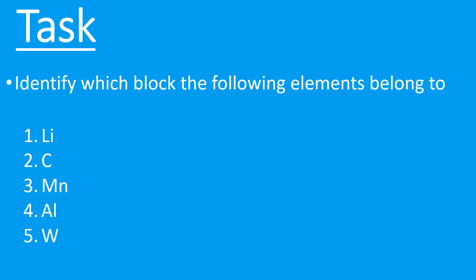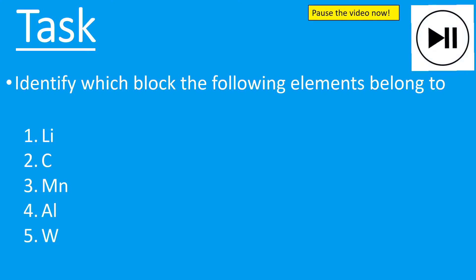Now it's your turn. Pause the video and identify these five elements as s, p, or d block using your periodic table. When you're ready to hear the answers, unpause. Lithium is s block, carbon is p block, manganese is d block, aluminium is p block, and tungsten is d block — all because of where their outer electrons are found, that is, what type of subshell the outer electrons are in.